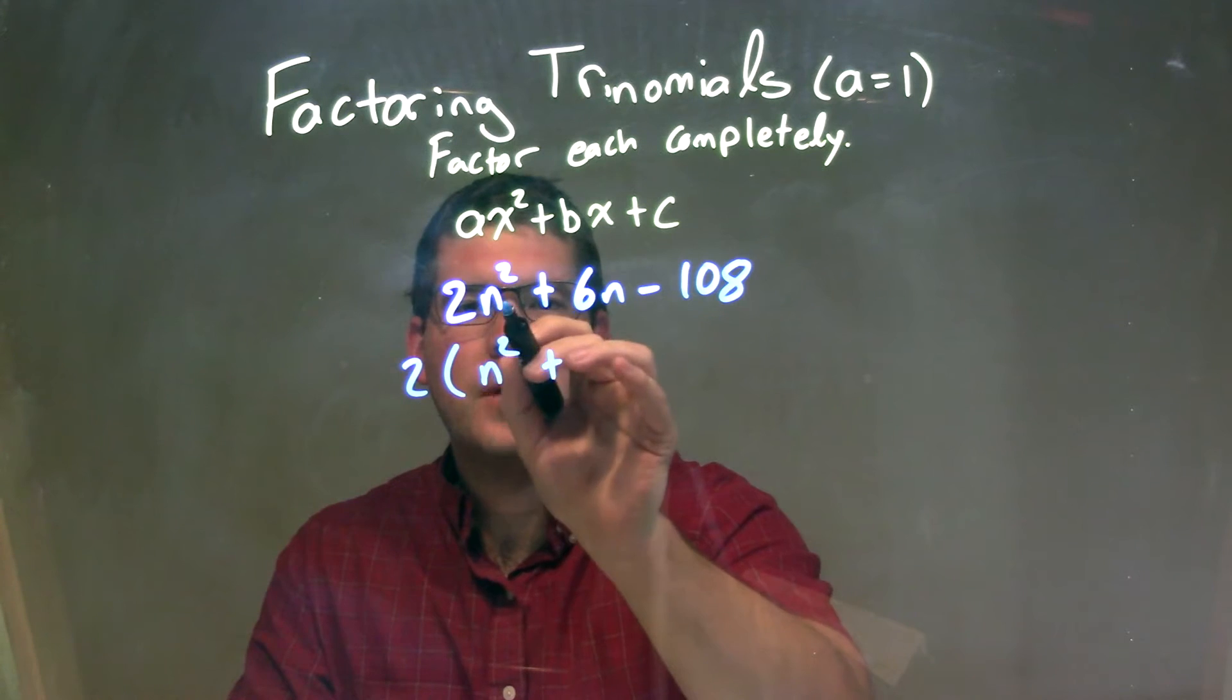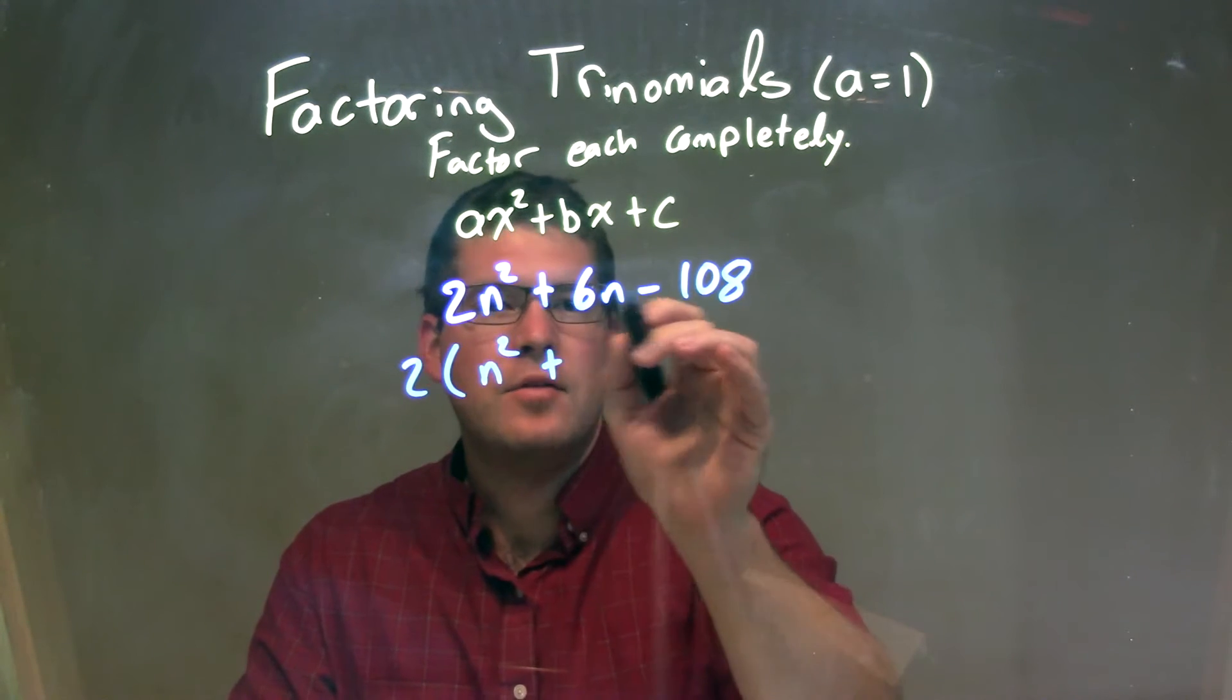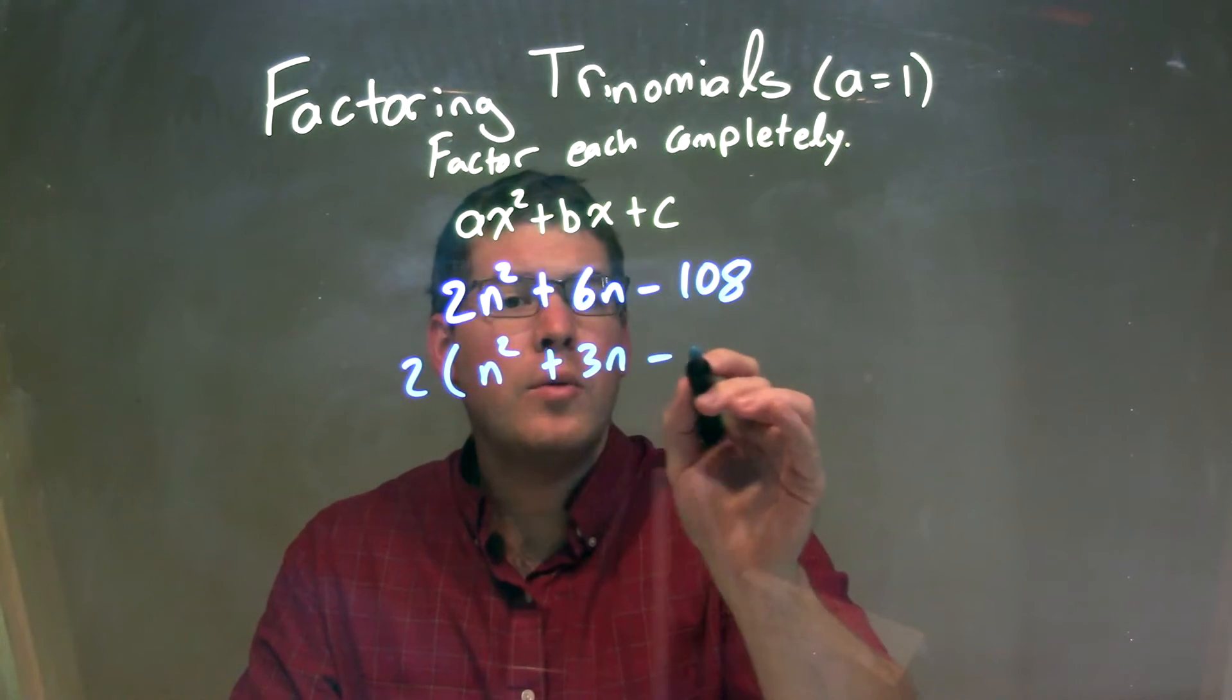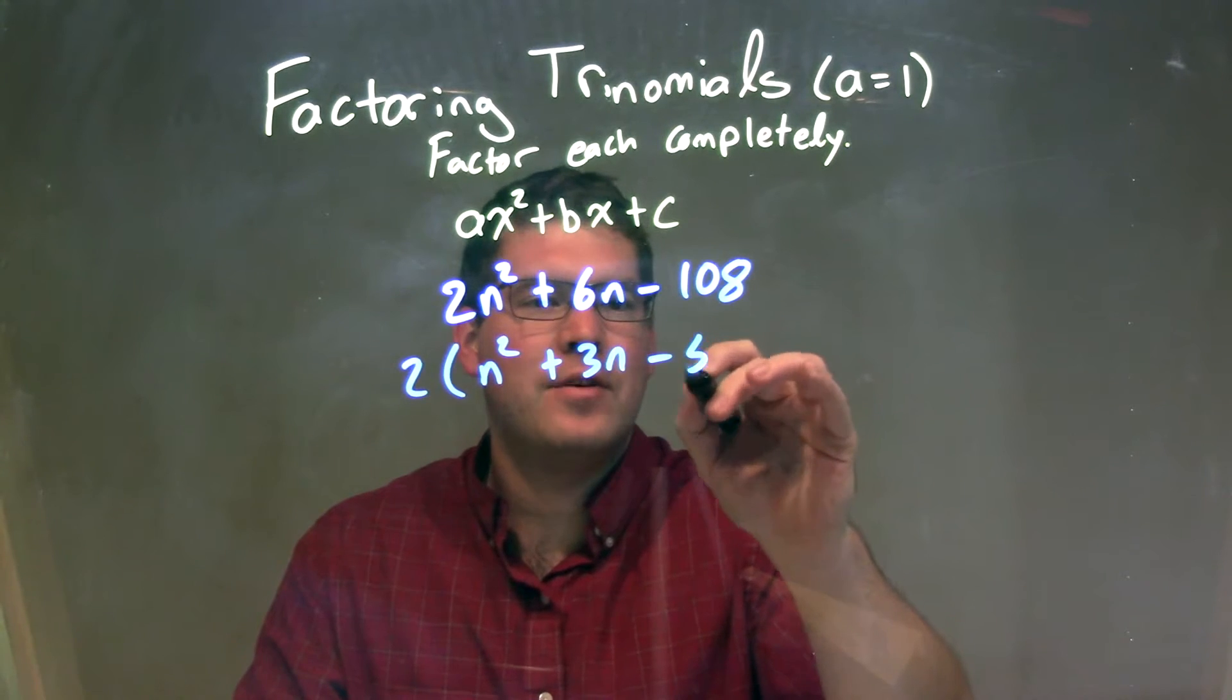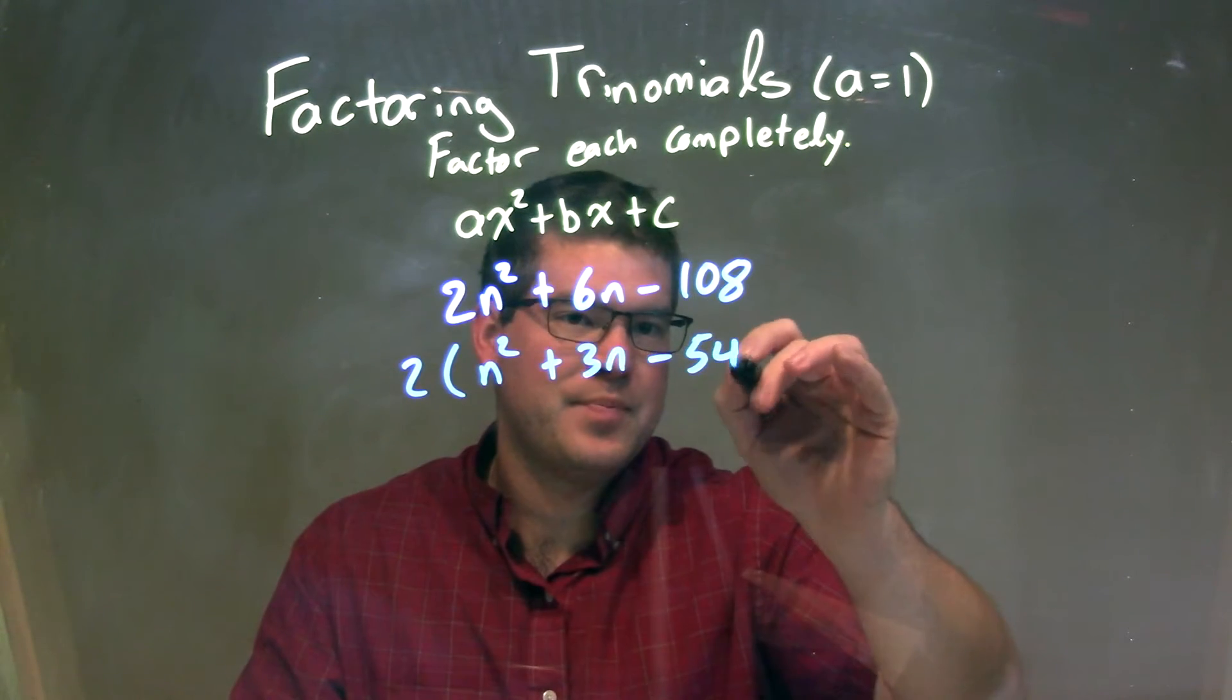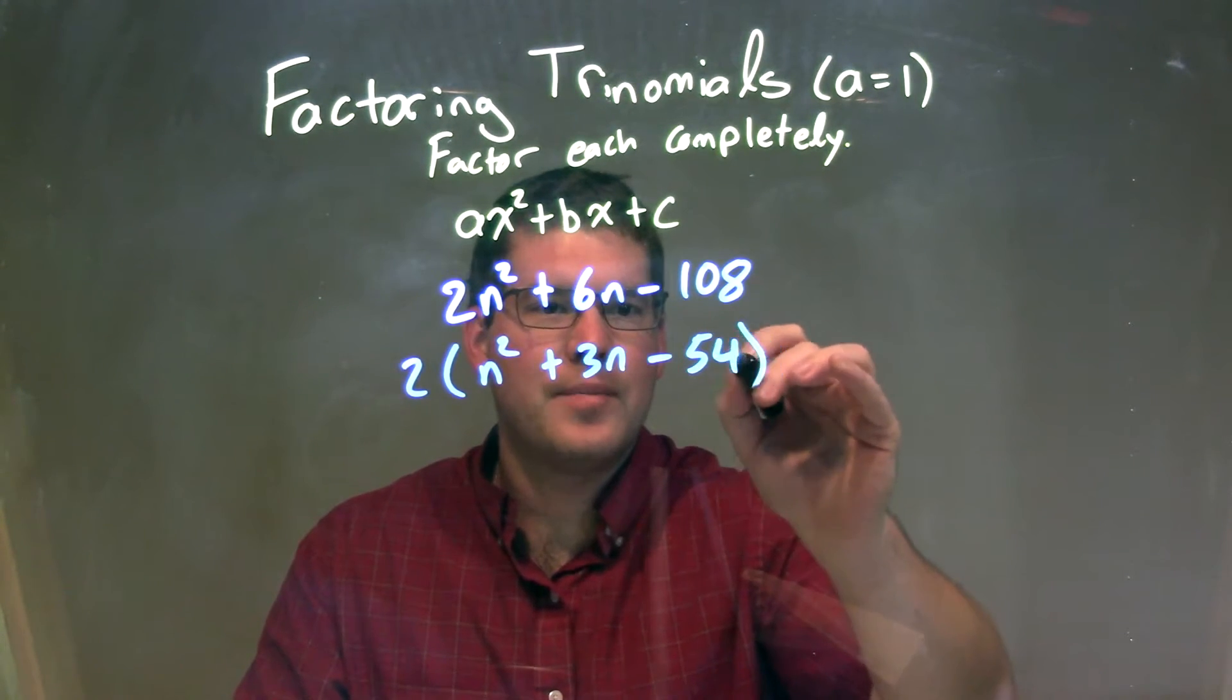So pull out a 2 from there, 2n squared, I get an n squared, 6n becomes a 3n, and 108 basically divided by 2 is a 54.